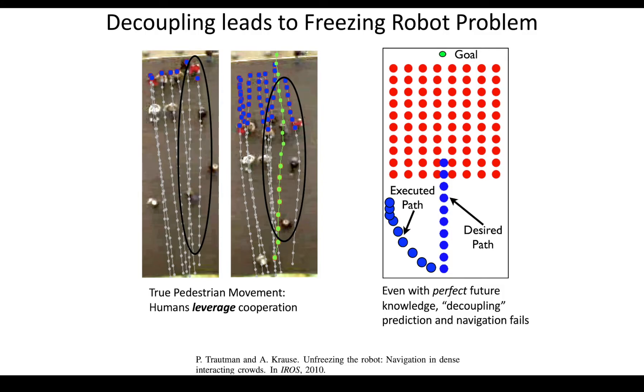So one of the core problems in crowd navigation is something called the freezing robot problem. And this happens when we don't account for how the robot's actions influence the people around it. And so as we see in these pictures, if the robot looks forward and sees the crowd coming at it that are very densely packed, it can very well decide that there isn't a safe path through that crowd, whereas humans very naturally and instinctually leverage the cooperation of other agents.